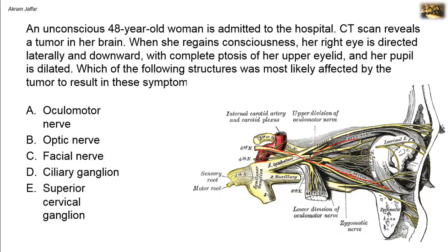However, when the superior oblique muscle is affected by injury to the trochlear nerve, the eye will be directed downwards and medially by the action of the inferior rectus muscle, which is supplied by the oculomotor nerve. This is not the case here. In addition, another clue given in the stem is ptosis of the upper eyelid and a dilated pupil.